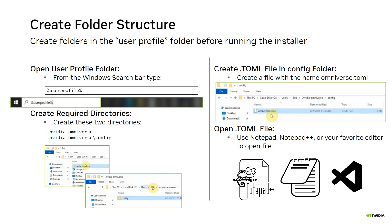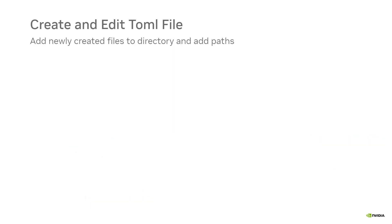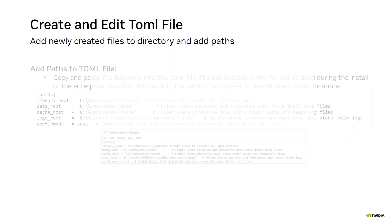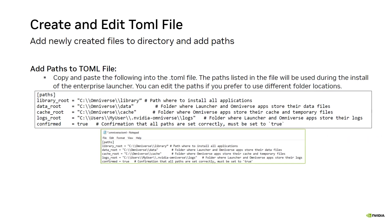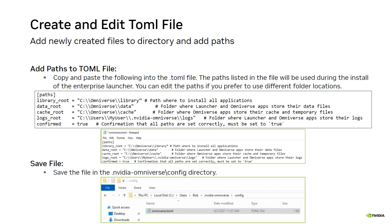Now that the folder structure is in place, the next step is to configure the TOML file. With omniverse.toml open, paste the information from the first block into the file. Adjust the drives and paths according to your environment, as what's shown is merely an example. Then save the file.